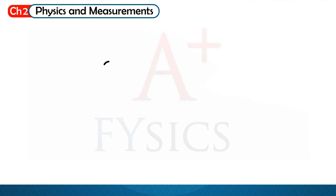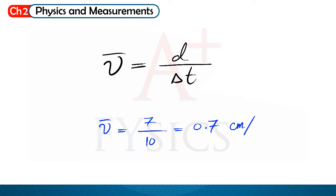We want to calculate average speed. The relation for average speed is distance divided by time. To simplify the calculations, I will assume that the time taken is 10 seconds. So average speed is 7 cm divided by 10 seconds, which is equal to 0.7 cm per second.